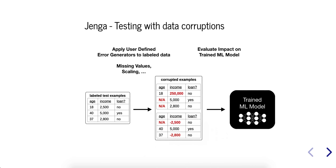The idea behind Jenga is to apply user-defined error generators to labeled data in order to evaluate the impact of those corruptions on your trained machine learning model. If you want to find out more, check out our paper.